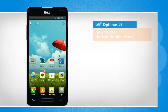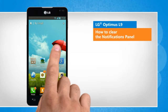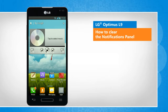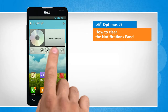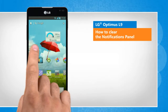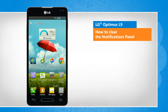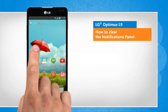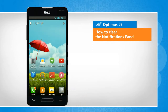Hi friends! Notifications are alerts on the top of your LG Optimus smartphone's home screen that inform you about new messages, missed calls, updates, etc. Do you want to clear the notifications from your smartphone? Here are the steps to do so.